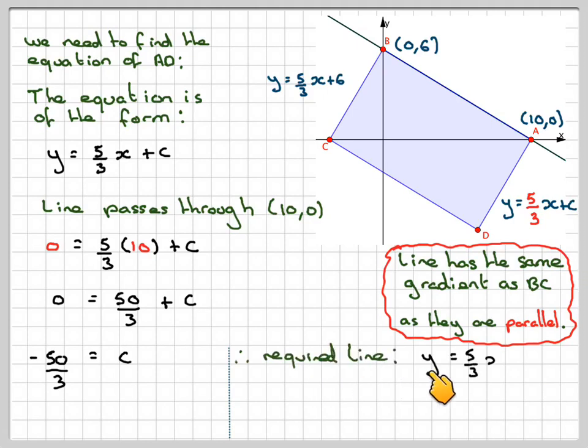So the required line is Y = 5/3X - 50/3. Now you could write that down as the final answer and it would be correct because we were not actually asked for a particular format. But another format is to multiply that through by 3. So you get 3Y = 5X - 50. And then take the 3Y over to here. So you get 5X - 3Y - 50 = 0. So either of those would be correct. You should be wary about that when problem solving.